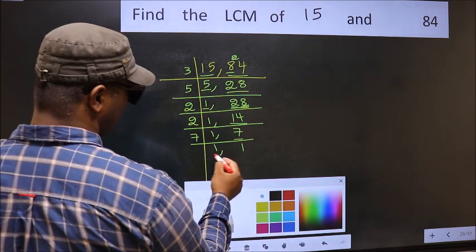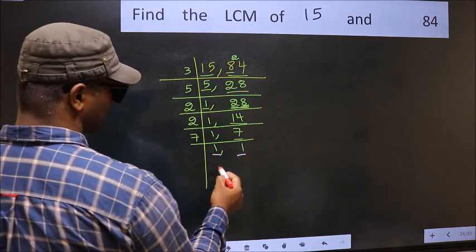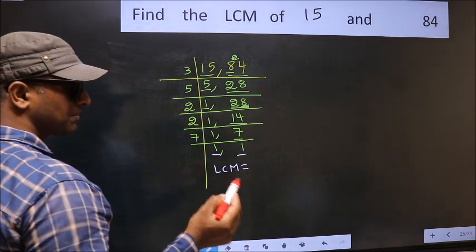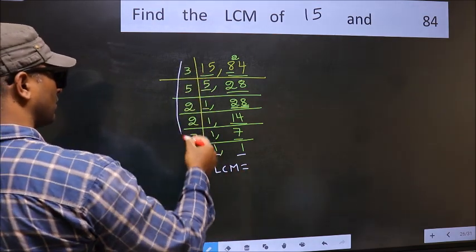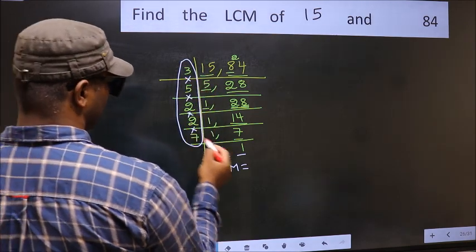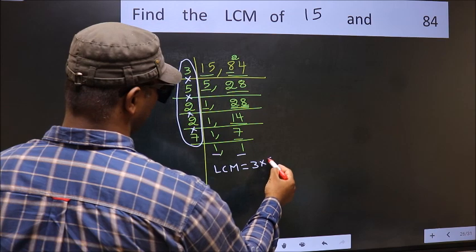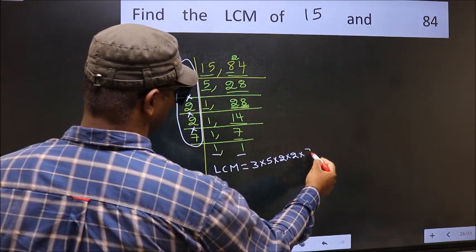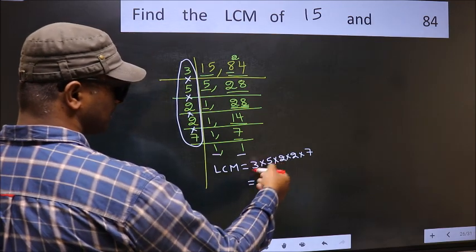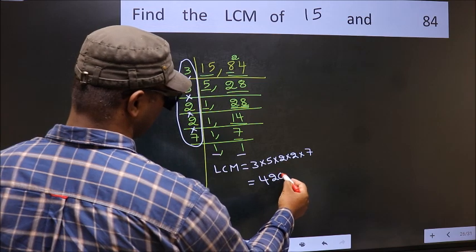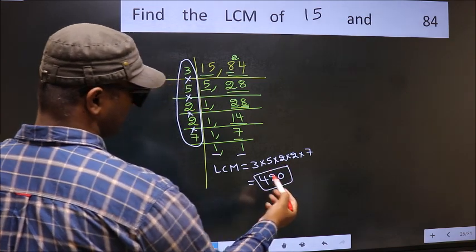So we got 1 in both places. So our LCM is the product of these numbers: 3 into 5 into 2 into 2 into 7. When we multiply these numbers, we get 420 as our LCM.